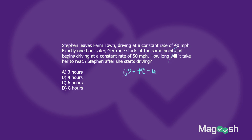For every hour, Gertrude catches up 10 miles — after 2 hours she's closed 20 miles. She starts 40 miles behind, so using our distance-rate formula: distance is 40 miles and the catch-up rate is 10 miles per hour. Therefore T equals 4 hours — that's how long it takes her to catch up. We still use D equals RT, but we think of it differently in terms of subtracting rates rather than adding them together. That's the tricky part.